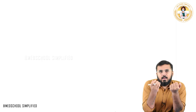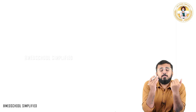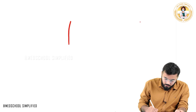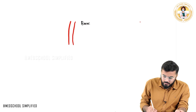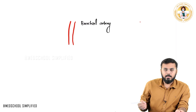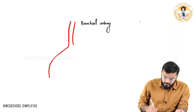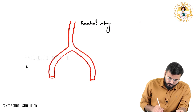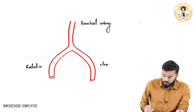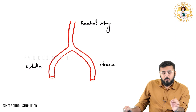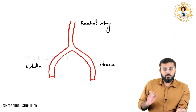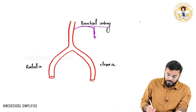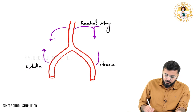The brachial artery will give some branches, and the radial and ulnar arteries will also give some branches. These branches join with each other and form anastomoses. The brachial artery divides into two branches: one is called the radial artery and the other is the ulnar artery. From the brachial artery and from the radial and ulnar arteries, various branches arise.